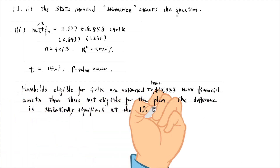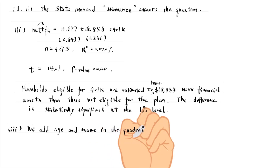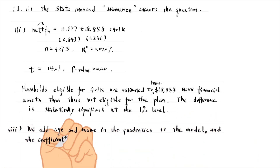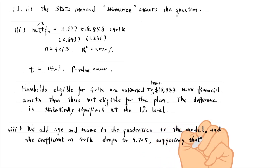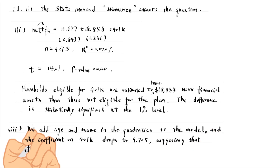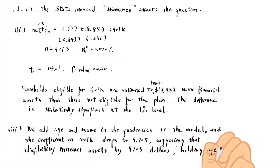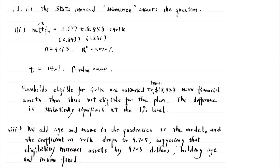The difference is statistically significant at the 1% level. In part 3, we add age and income in quadratics to the model, and the coefficient on 401(k) drops to 9,705, suggesting that eligibility increases assets by $9,705, holding age and income fixed. It is still statistically significant at the 1% level.